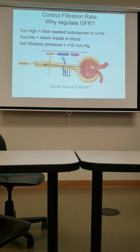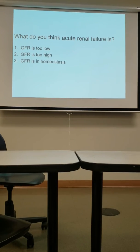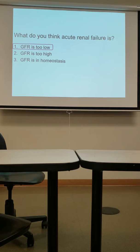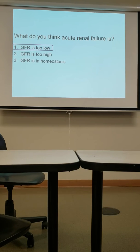If the kidneys aren't filtering your blood, they're not doing their job — they're failing. Let's see if you guys can figure this out. What is acute renal failure? Is it A) the glomerular filtration rate is too low, B) the glomerular filtration rate is too high, or C) the glomerular filtration rate is in homeostasis? One is the correct answer. If your filtration rate is too low, your kidneys are not filtering your blood well enough. Notice how your blood pressure is directly related to how well your kidneys function. If your blood pressure drops too low, you could risk going into renal failure because you don't have enough pressure to filter your blood.